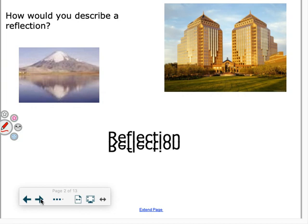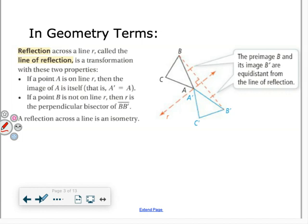So, what is a reflection? If we look at a reflection, it's the same image reflected over what we call a line of reflection. We're going to talk about that vocab word. A reflection reflects a figure over what we call a line of reflection.